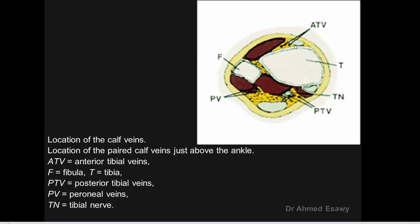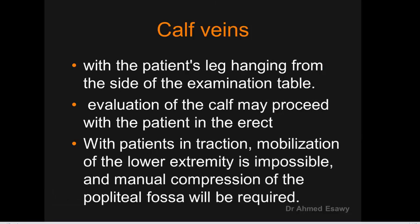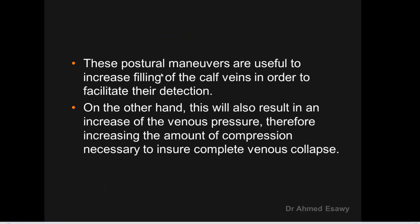This diagram represents the anterior tibial, posterior tibial, and peroneal veins: posterior tibial vein — posterior medially; peroneal vein — posterior laterally; anterior tibial vein — anterior medially. Calf veins may be paired or replicated at mid-calf. For examination, the patient's leg hangs from the side of the table. Evaluation may proceed with the patient erect if possible; if not, manual compression of the popliteal fossa is required. Push-run maneuvers are useful to increase venous filling for detection of calf veins.